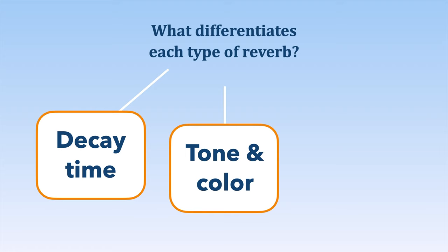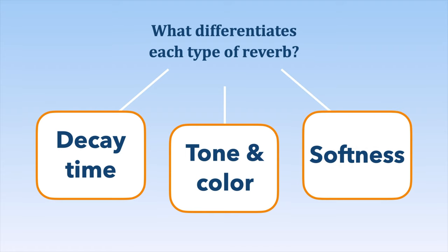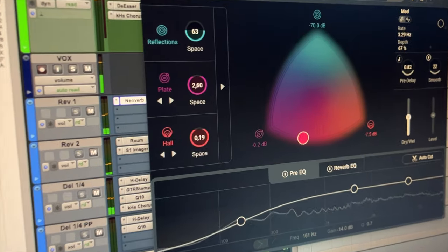The second differentiating factor is the tone and color of each type of reverb — some reverbs are very bright, clear, and powerful in the high-end range, while others focus more on the warm side and are a little more muffled. The last differentiator is the softness or, on the other hand, the power of each one. Some reverbs emphasize the power of the space and others emphasize smoothness — but you're gonna hear it in the audio examples.